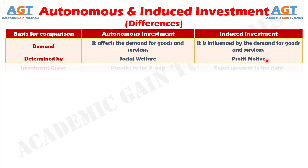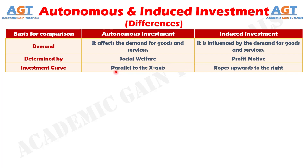Difference Number 8: Talking about the curve, the autonomous investment curve is always parallel to the x-axis, whereas the induced investment curve slopes upwards towards the right, indicating a positive functional relation between income and investment.